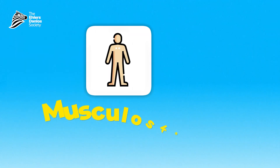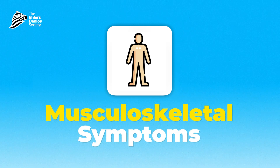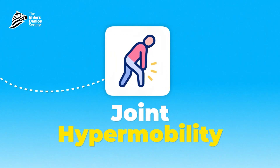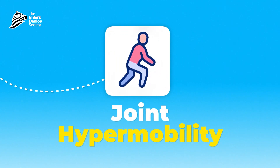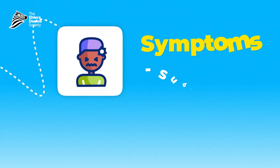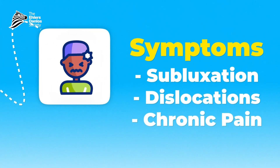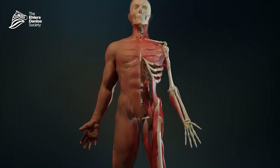HSD is more common than you'd think, but it's often misunderstood and frequently misdiagnosed. The musculoskeletal symptoms involve joint hypermobility and the symptoms that result from it, which may include subluxations, dislocations, and chronic pain. Often the muscles work overtime to try to stabilize those loose joints, resulting in muscular pain related to overwork and cramping.